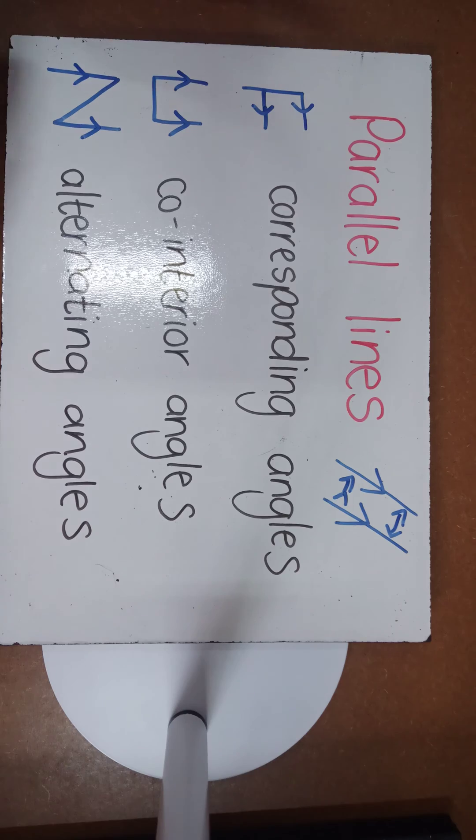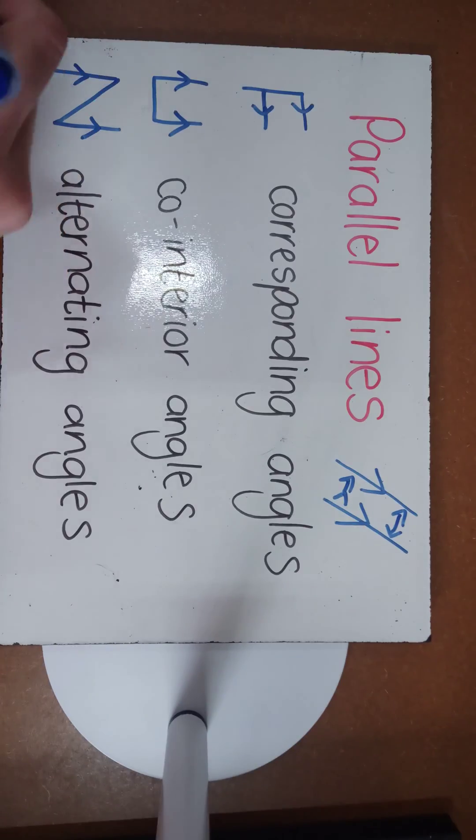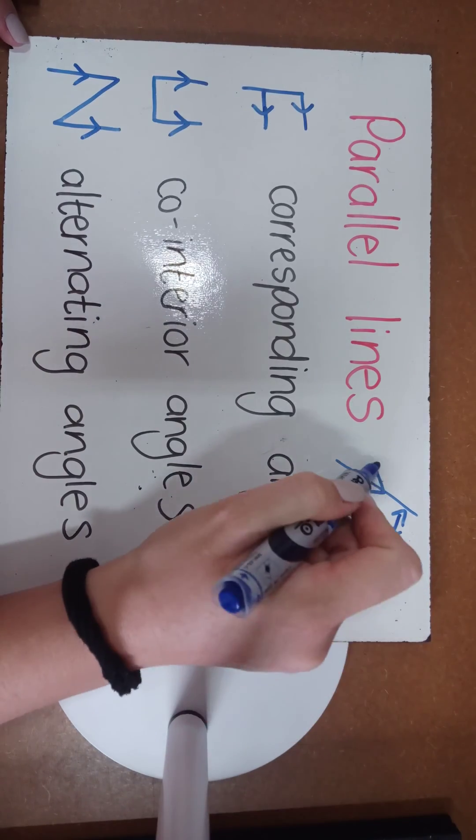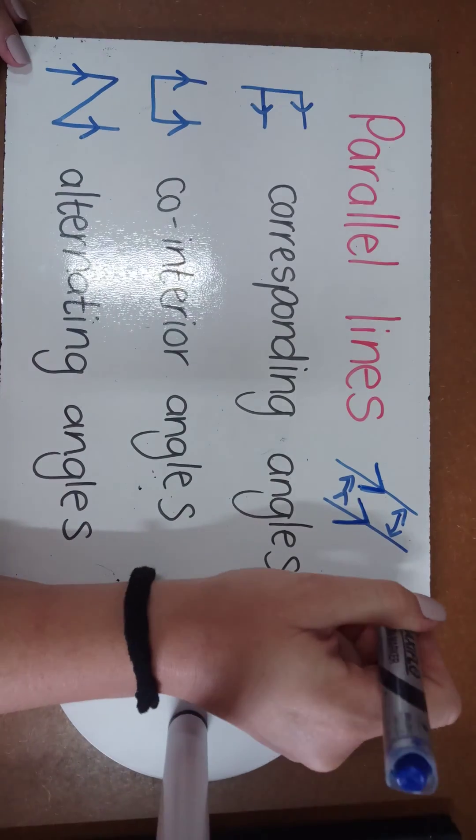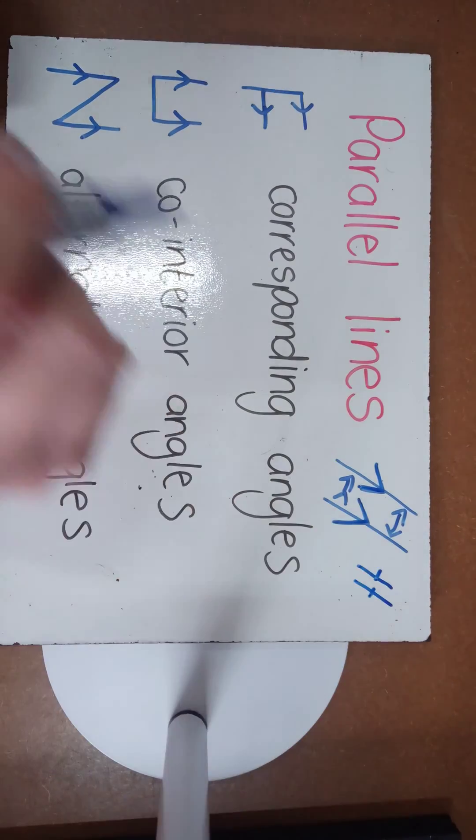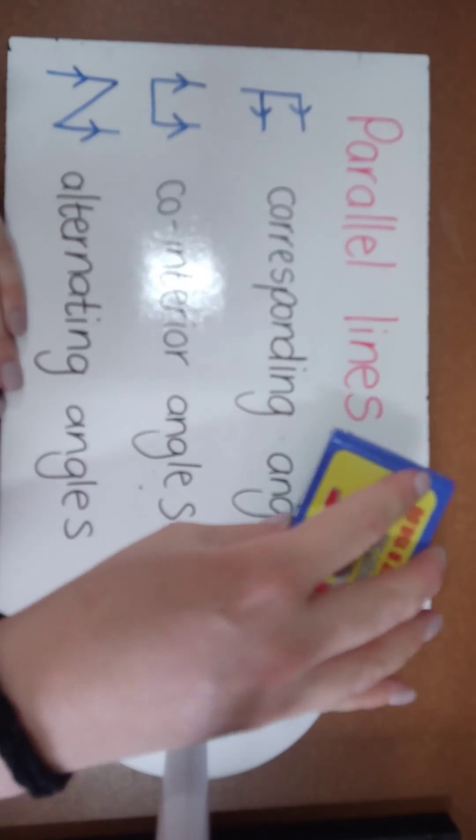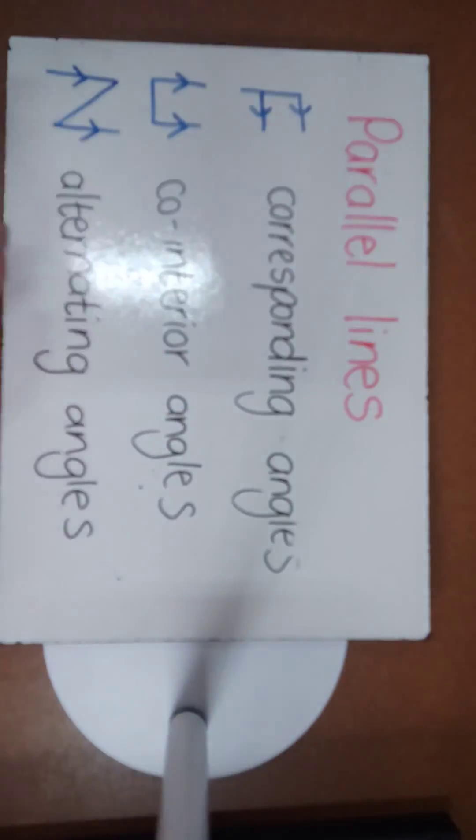These lines never touch or cross and these are parallel lines. And we know they are parallel because of the little arrows that are placed on the lines. Please remember that there's a difference between arrows or little lines being placed on the lines. So we've got parallel lines that are equidistant apart. They never touch.